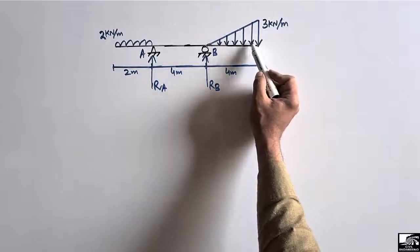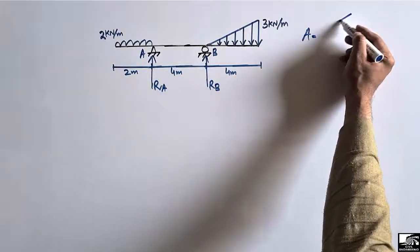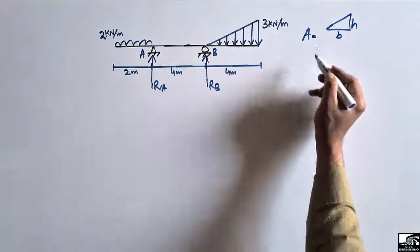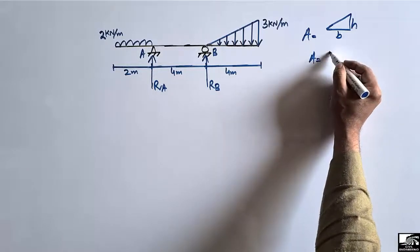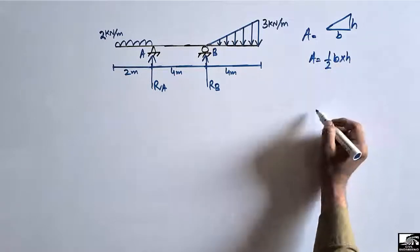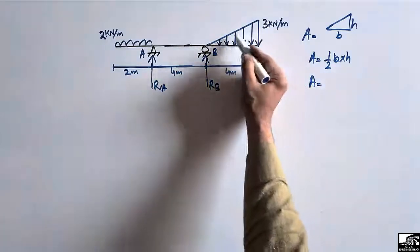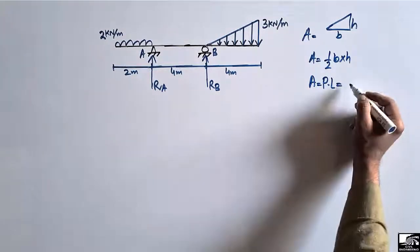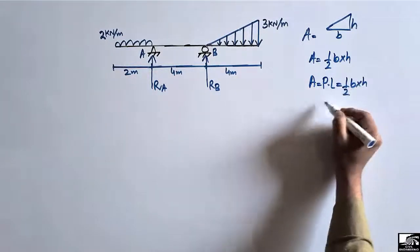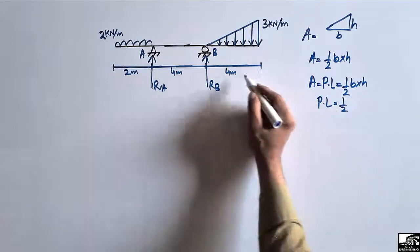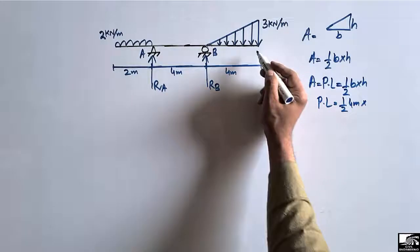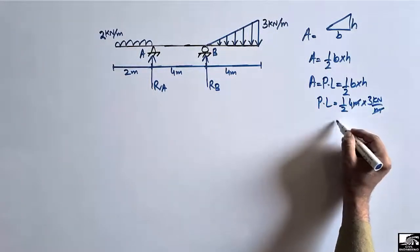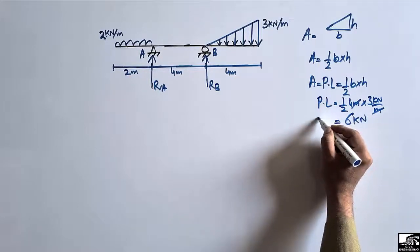To convert the triangular load, we find the area of the triangle. For a triangle of base b and height h, the area is half base into height. So the pointed load equals half times base (4 meters) times height (3 kilonewton per meter). The meters cancel and we get 6 kilonewtons.